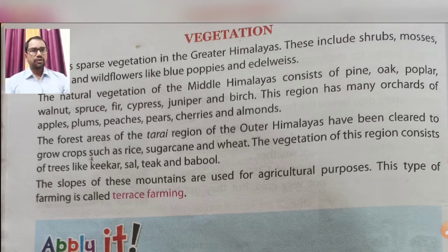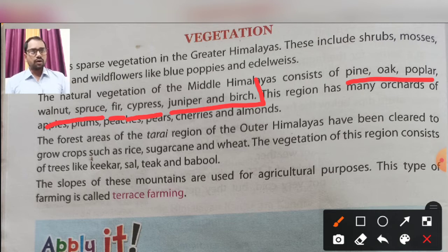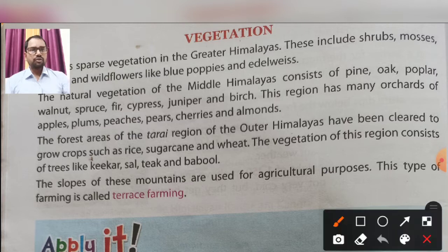The natural vegetation of the Middle Himalayas consists of pine, poplar, walnut, spruce, fir, cypress, juniper, and birch. These are the basic trees found in the Middle Himalayas. This region also has many orchards of apple, plums, peaches, pears, cherries, and almonds.